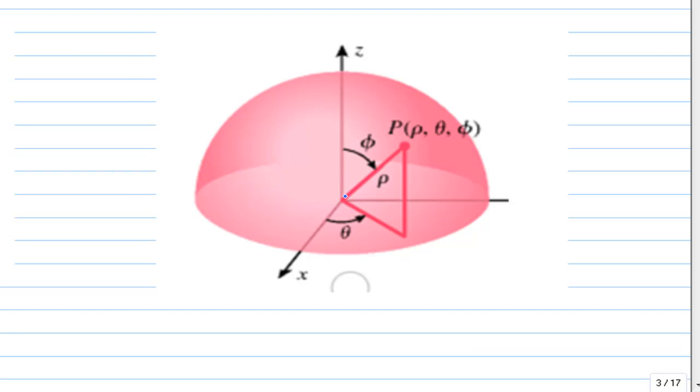Second number is theta. This is how much to rotate the x-axis. And the third number is phi. It is an angle measured downward from the z-axis.